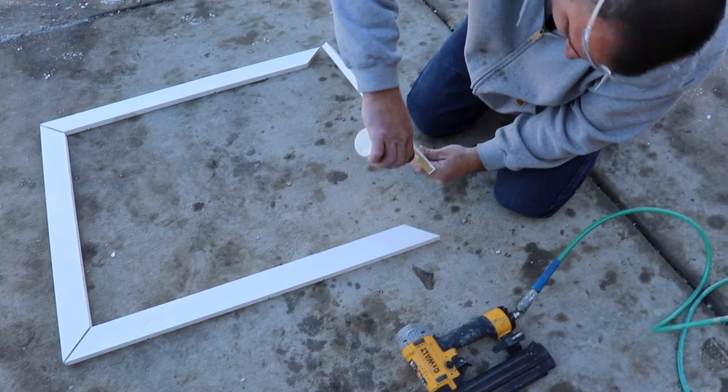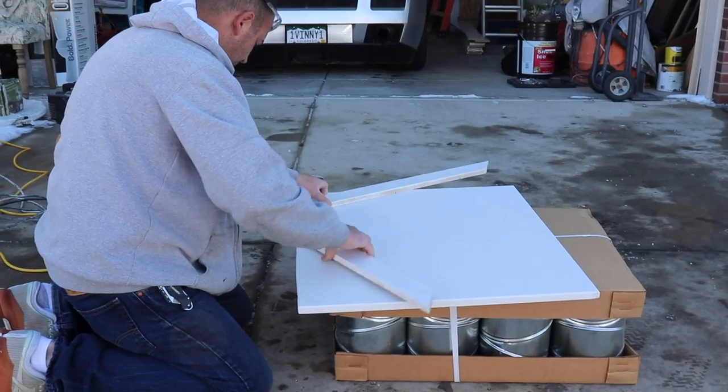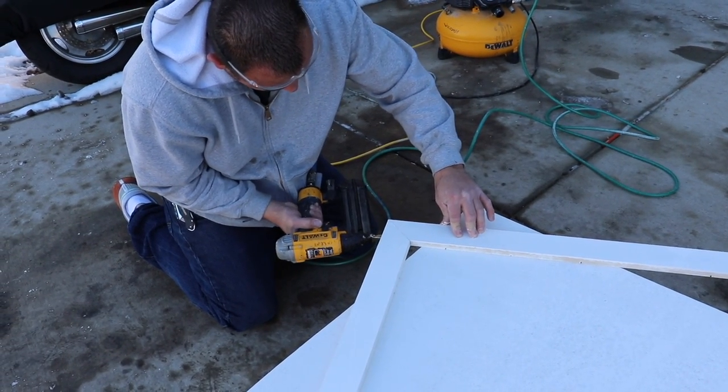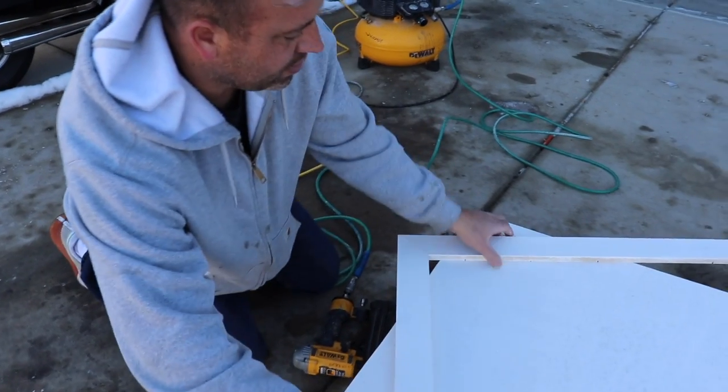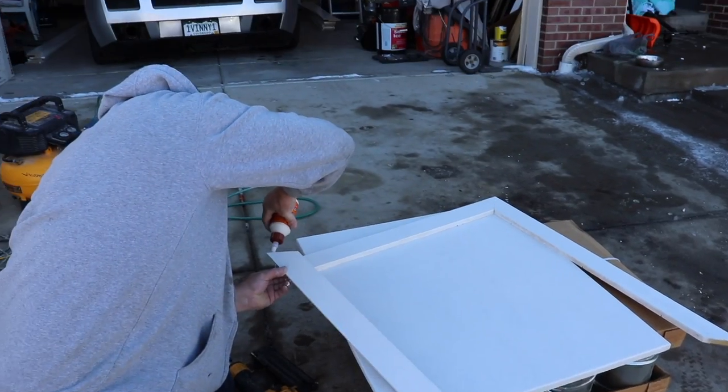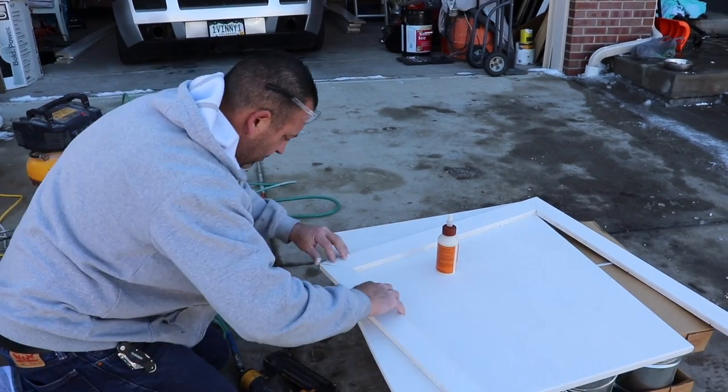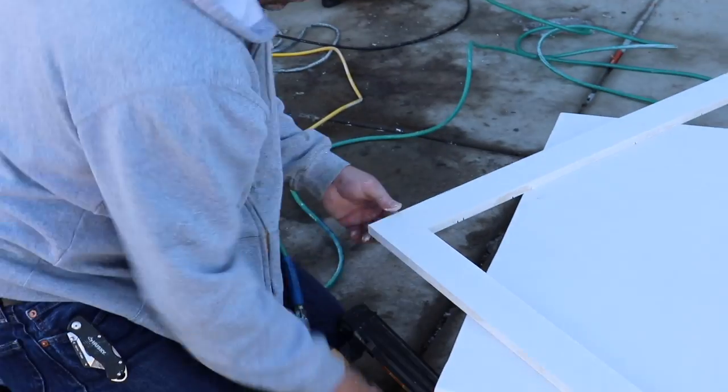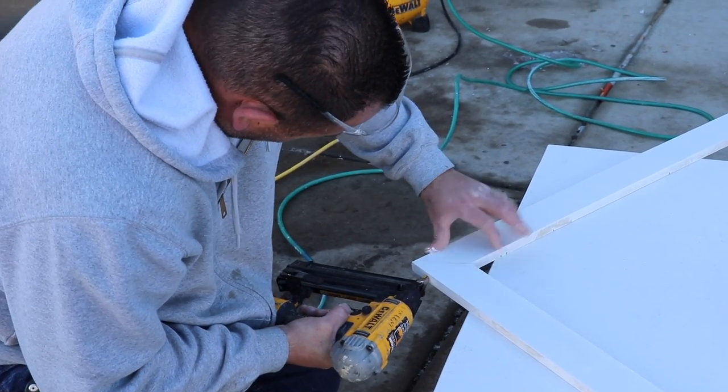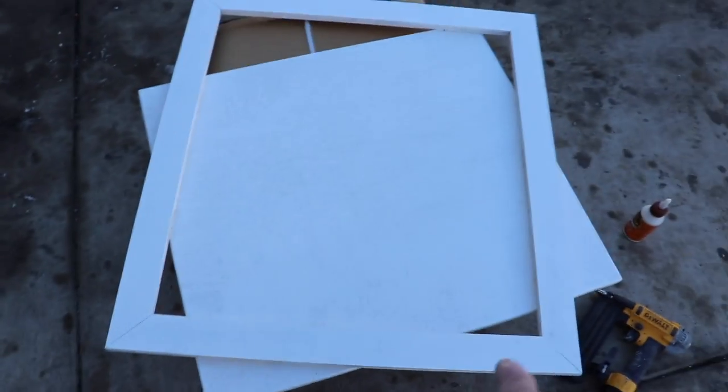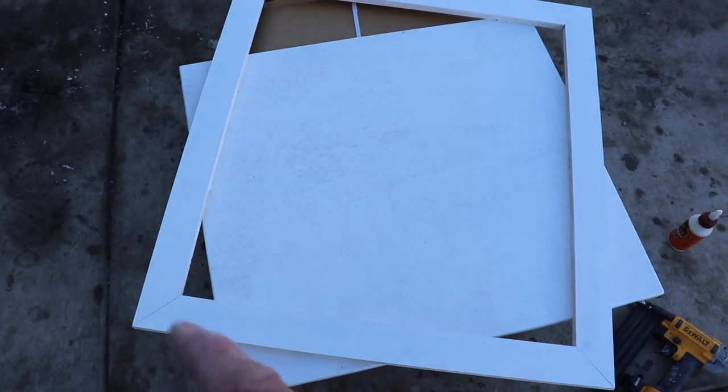All right, so we're just going to add a little bit of wood glue. So we're going to just do one nail so that way we can adjust if we have to.